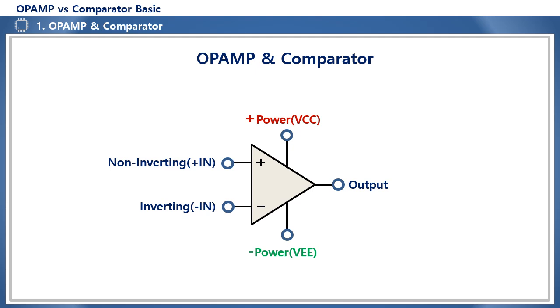A comparator, like an op-amp, consists of five terminals and is a device that compares the input voltages of the plus and minus input terminals to determine which one is higher and outputs low or high.